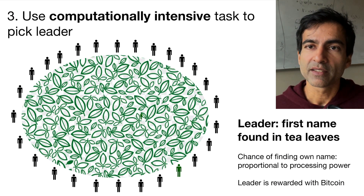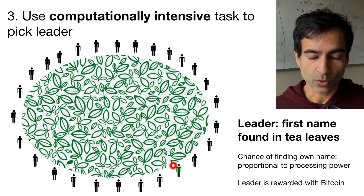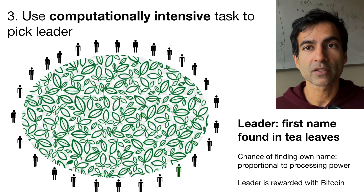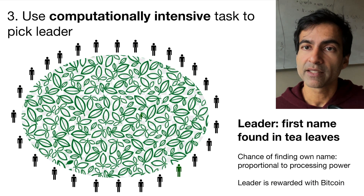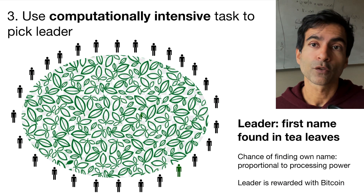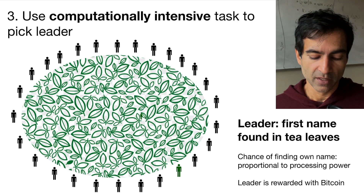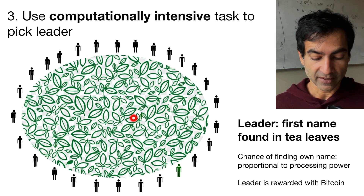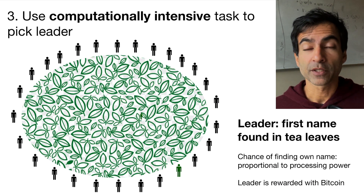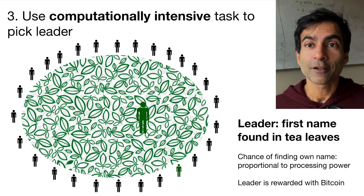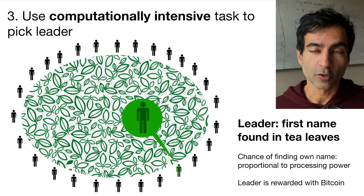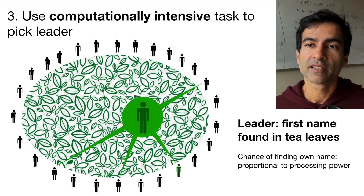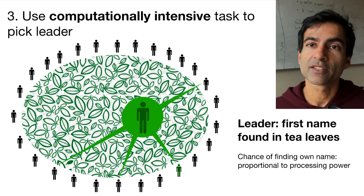Everyone wants to be the next leader. Each person in the network wants to be the next leader because the protocol is set up in such a way that the leader will be paid a small amount of Bitcoin for their services — for the service of being the leader and picking the next transaction. So everybody is looking for their own name in the tea leaves. When someone finds their name, say this green person here has found their name somewhere in the tea leaves, they simply announce that they have found their name in the tea leaves and announce the location.